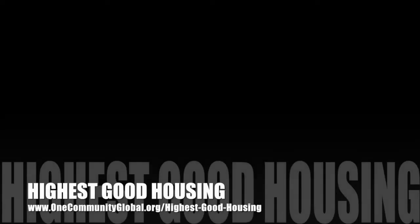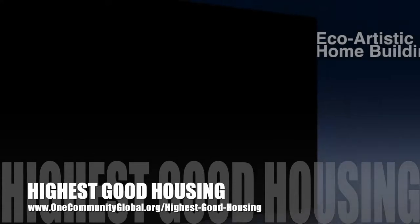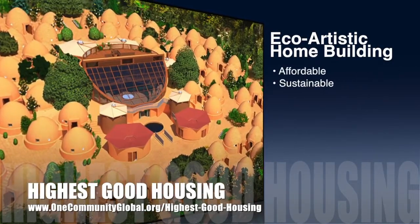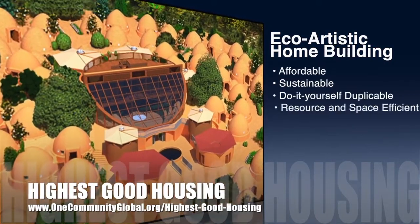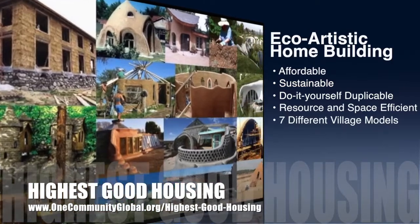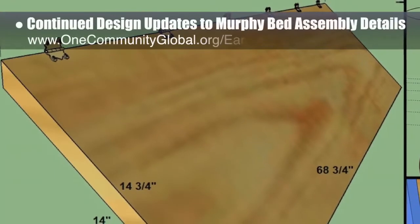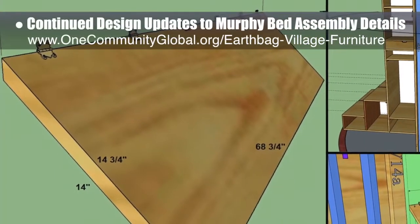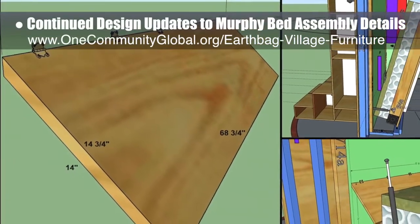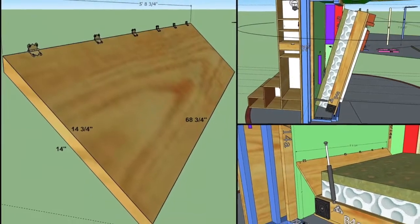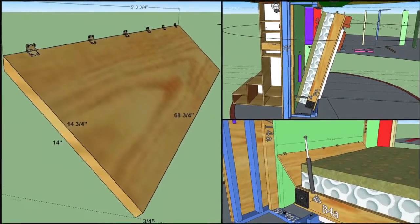One Community's approach to highest good housing is eco-artistic home building that is affordable, sustainable, do-it-yourself duplicable, resource and space efficient, and consists of seven different sustainably constructed village models. This week, the core team continued design updates to the open source Murphy bed furniture assembly details. We confirmed bed swing clearance, checked dimensions of parts O, WT28, and WT17, and added a headboard option. You can see some of this work here.